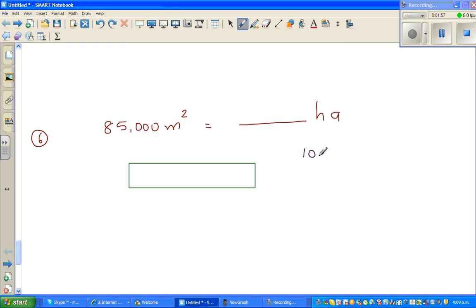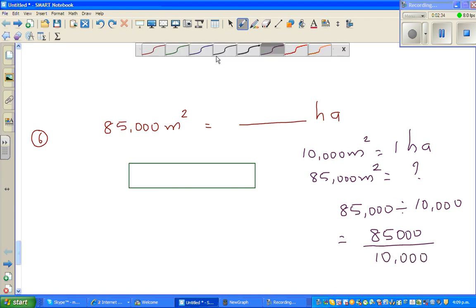What is the fact that we know? 10,000 meters squared is one hectare. So 85,000 meters squared is how many hectares? That's the question. The answer would be 85,000 divided by 10,000. I'll try to do without the calculator. You can cancel the zeros or divide both by thousand, so this is 85 over 10.